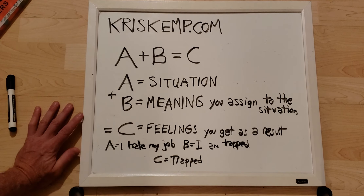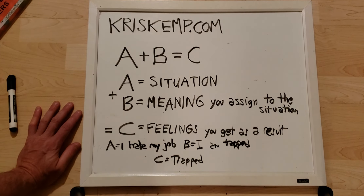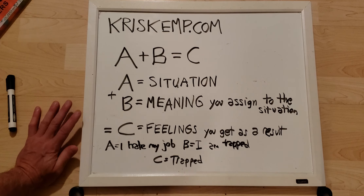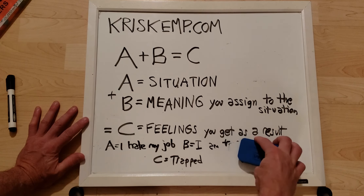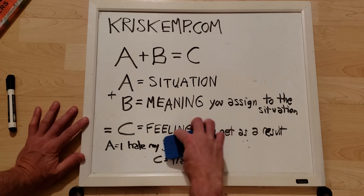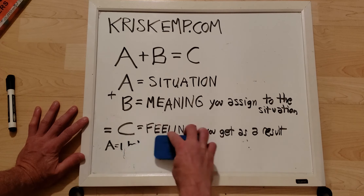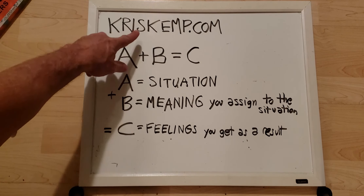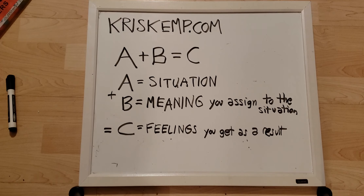Anyway, this is an overview of A plus B equals C. A is the situation. B is the meaning you assign to the situation. And C are the feelings you get as a result of A plus B. I hope this has helped. If you want more information, go to chriskemp.com — self-development made simple. Thank you.